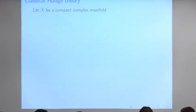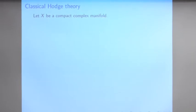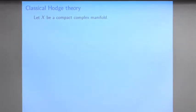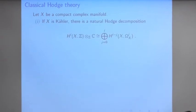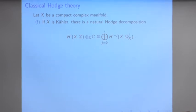This talk is about p-adic Hodge theory. Let's first recall classical or complex Hodge theory. Here's some compact complex manifold — I will discuss examples on the next slide. The famous theorem of Hodge is that if X admits a Kähler form, then there is a natural Hodge decomposition: you take the singular cohomology of X with complex coefficients, and it decomposes as a direct sum over Hodge cohomology groups.